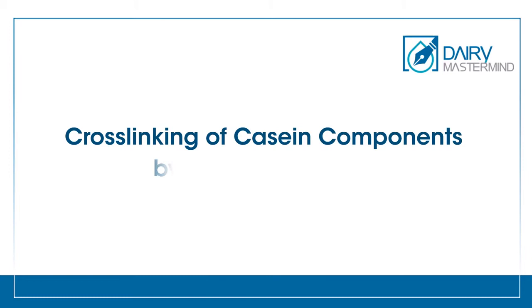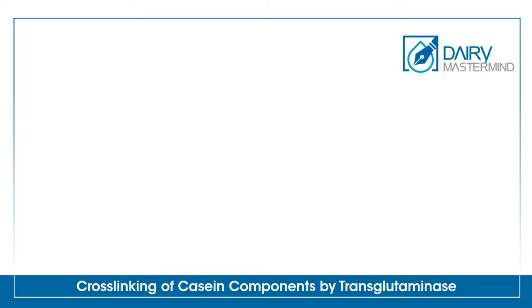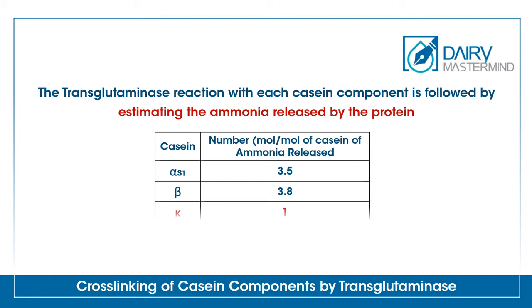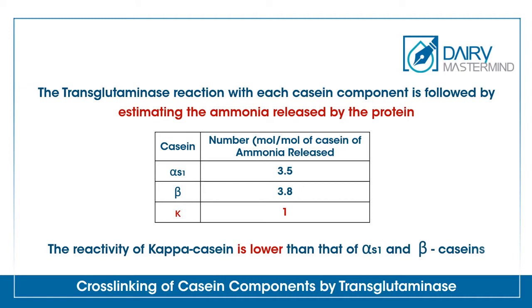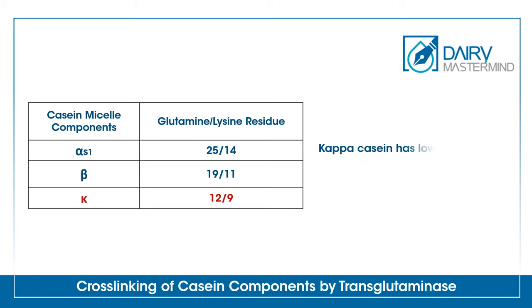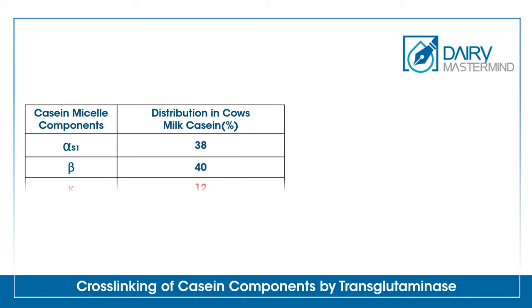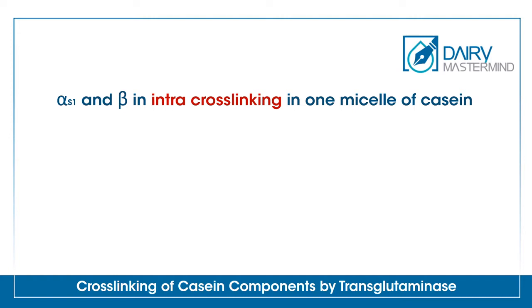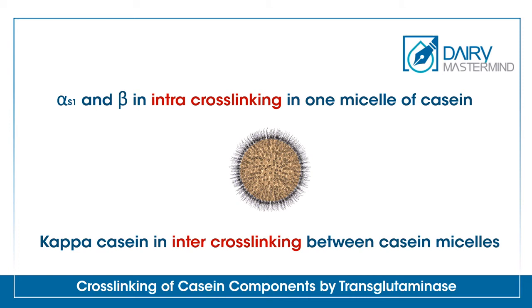Cross-linking of casein components by transglutaminase: The transglutaminase reaction with each casein component is followed by estimating the ammonia released by the protein. The reactivity of kappa casein is lower than alpha-S1 and beta-caseins. The reason may be that kappa casein has a lower amount of lysine and glutamine residues than alpha-S1 and beta, although kappa casein is more exposed. Also, the percentage of kappa casein in casein micelles is less than that of beta and alpha-S1. As a result, alpha-S1 and beta-casein are more important in creating intra-crosslinks, and kappa casein is involved in inter-crosslinking due to its greater exposure in casein micelle when we have intact casein.